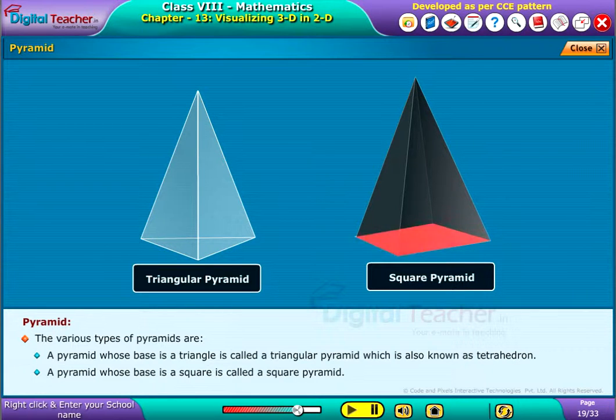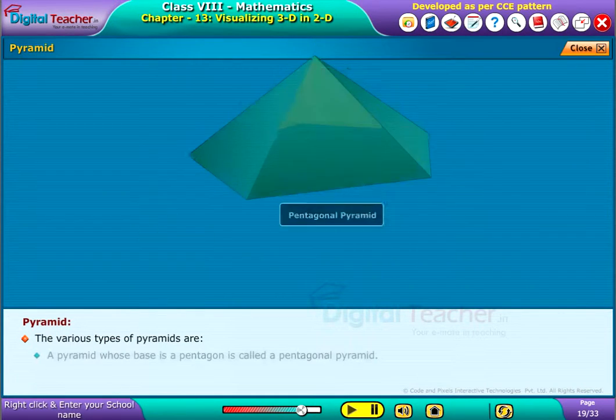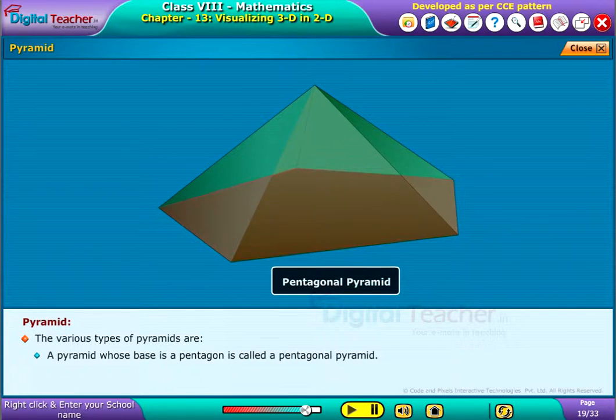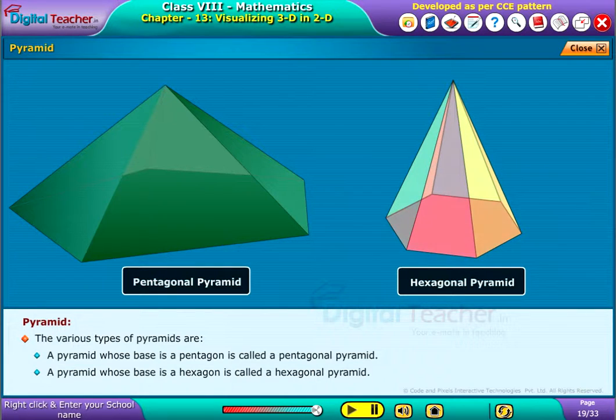A pyramid whose base is a square is called a square pyramid. A pyramid whose base is a pentagon is called a pentagonal pyramid. A pyramid whose base is a hexagon is called a hexagonal pyramid.